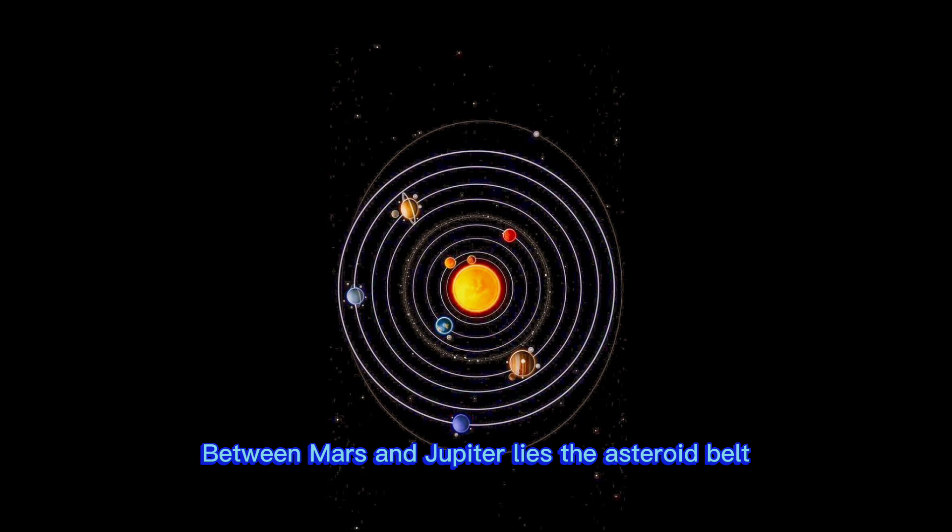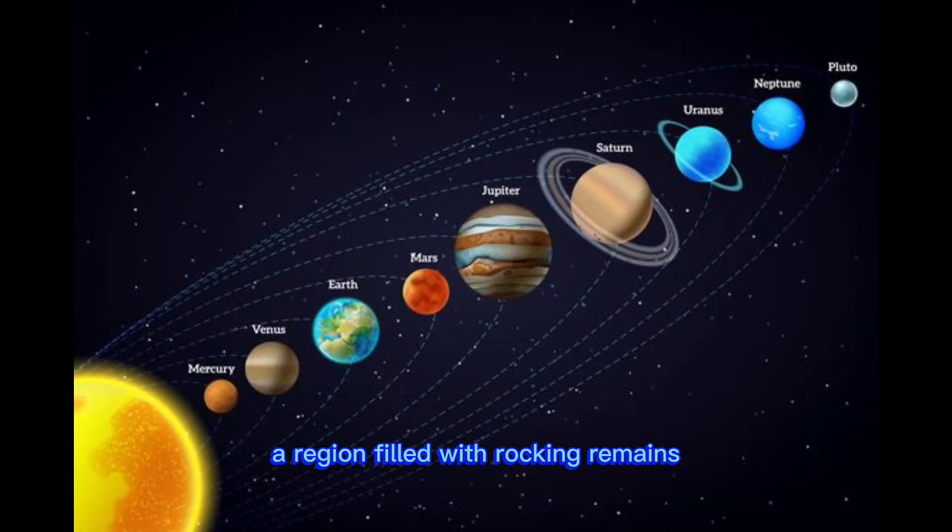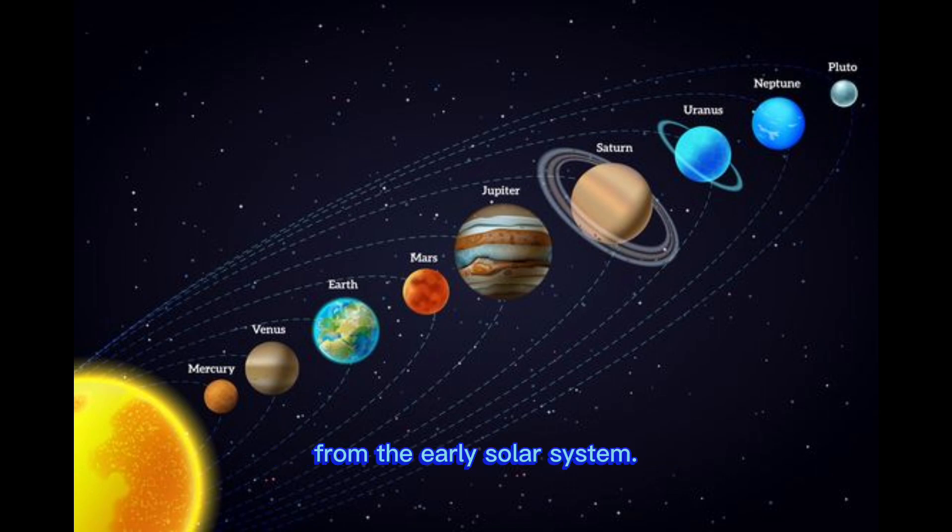Between Mars and Jupiter lies the asteroid belt, a region filled with rocky remains from the early solar system.